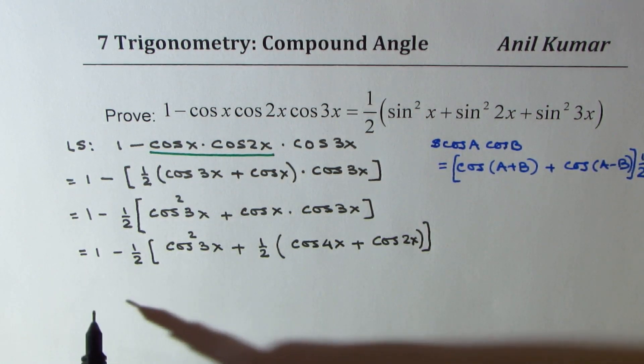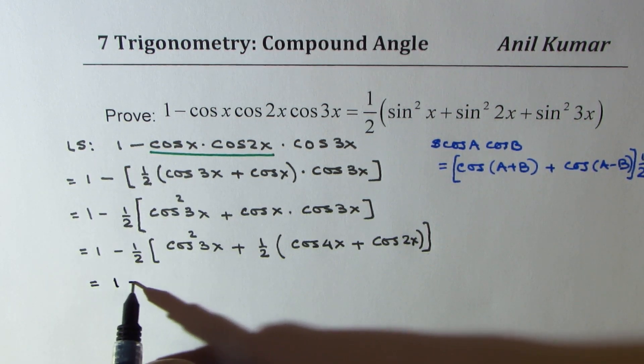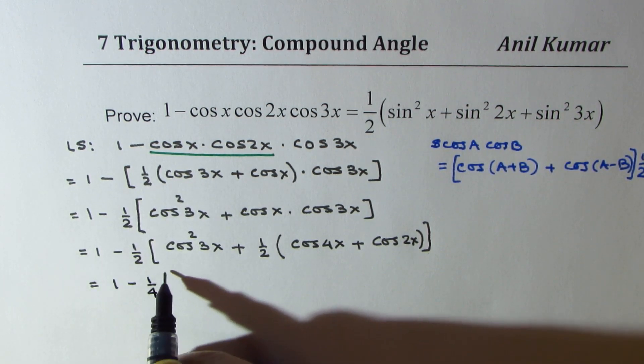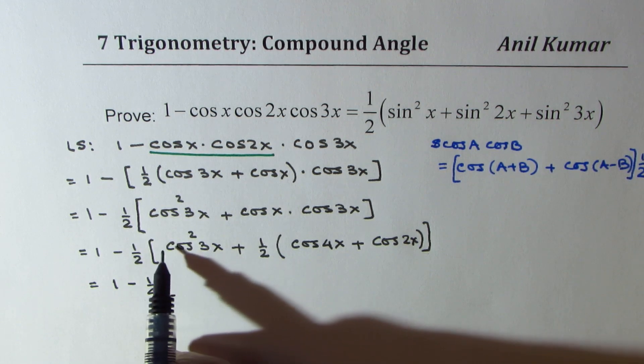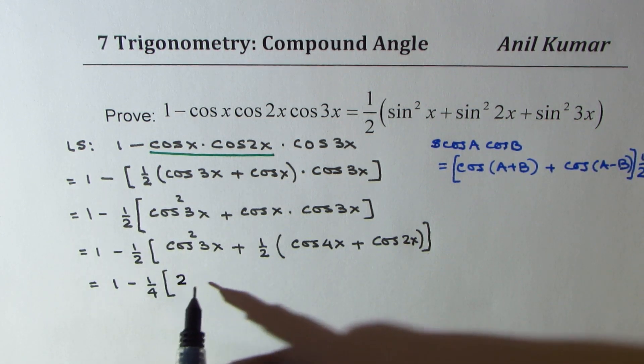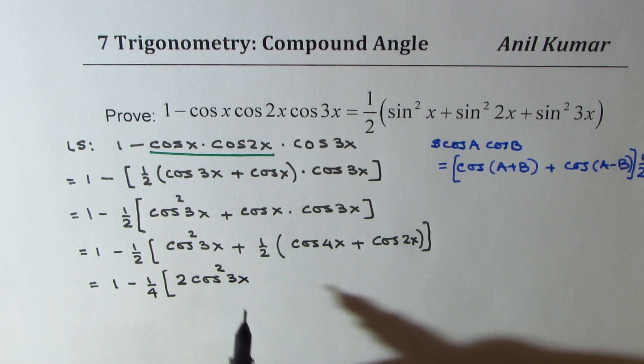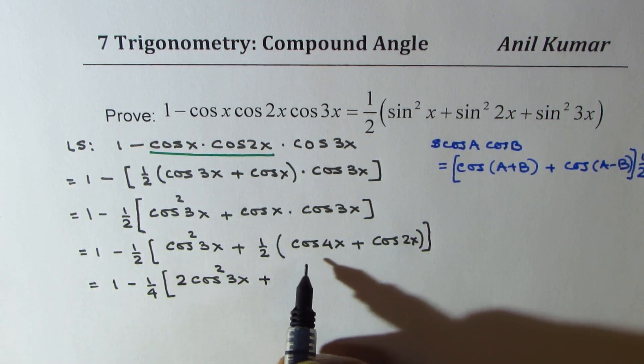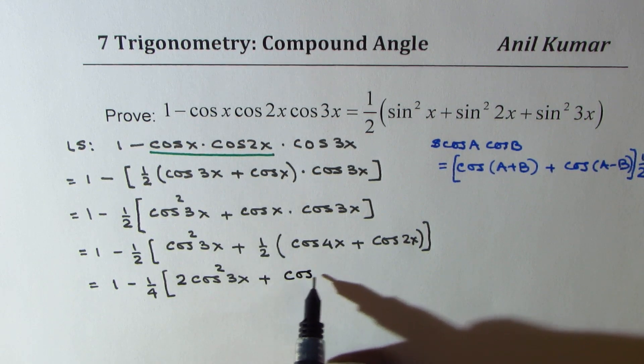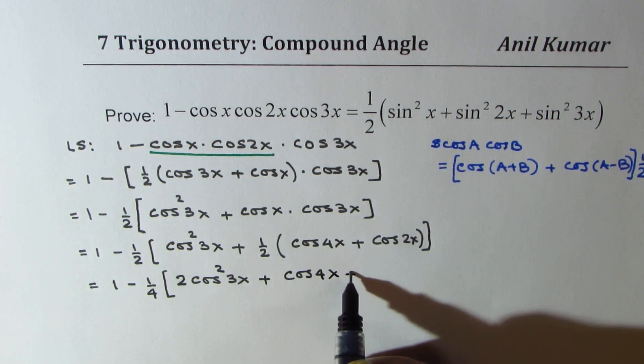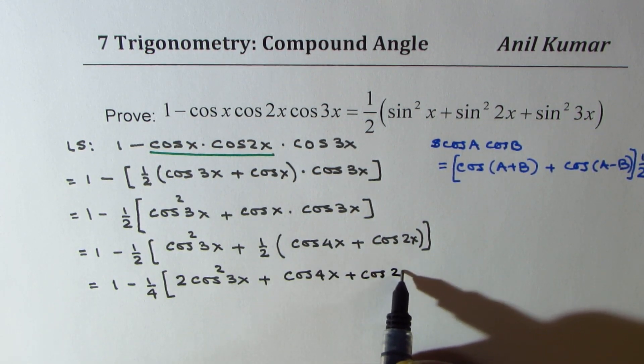Let's take this half also outside. Then, we get 1 minus 1 over 4. It has to be multiplied here. So, it gets 2 cos square 3x plus we get cos 4x plus cos 2x.